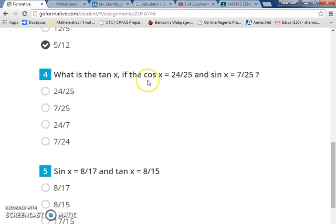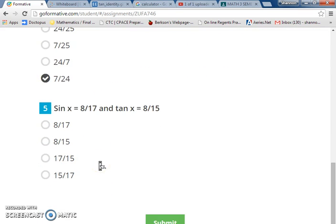Number 4, what's the tangent of x if the cosine is 24/13 and the sine of x is 7/13? I need to take the sine over the cosine, so the numerator of my sine is 7, the numerator of my cosine is 24, so it should be 7/24.